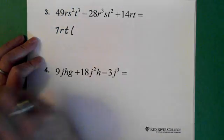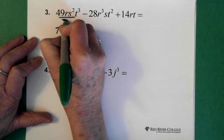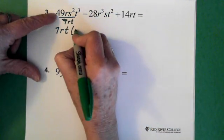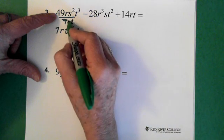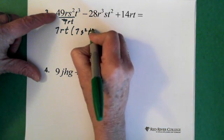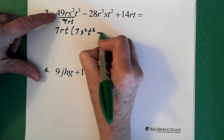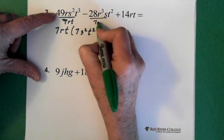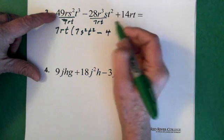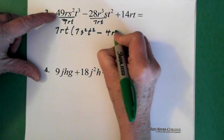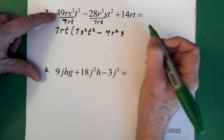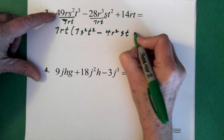And then we ask ourselves, what are we left with? So essentially again, what we're doing is dividing this by 7RT. So we're left with a 7. The R is gone. We're left with the S squared. And T cubed divided by T is T squared. And then our minus stays. And again, we're dividing this essentially by 7RT. 28 divided by 7 is 4. R cubed divided by R is R squared. S remains. And T squared divided by T is T.